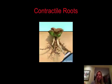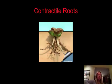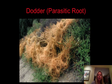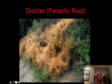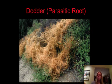Then you've got contractile roots, and these are actually going to spiral into the soil. They're going to be in areas where you have a lot of erosion, and that helps to anchor the plant really well — lilies are going to have that. Then you've got parasitic roots. All this yellow you see here is actually a parasitic root of dodder, and what that does is grow into another plant and suck out all their nutrients. Mistletoe is going to be parasitic as well.